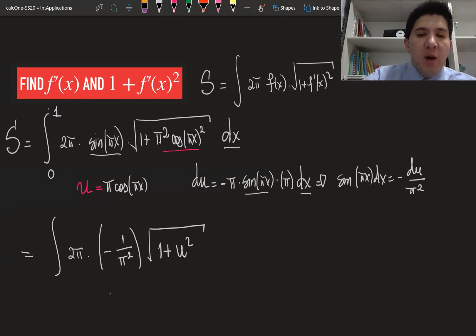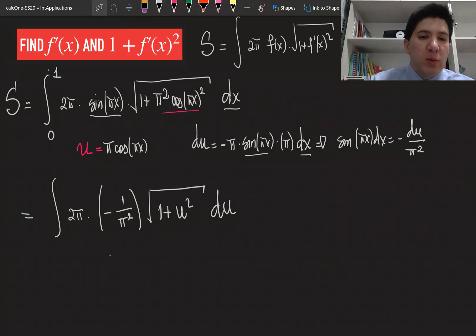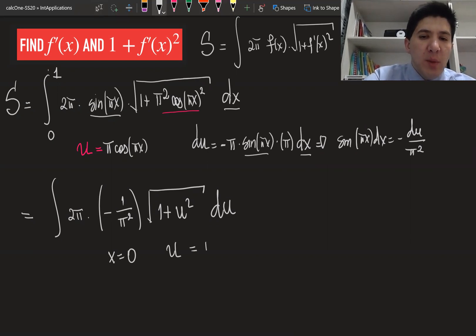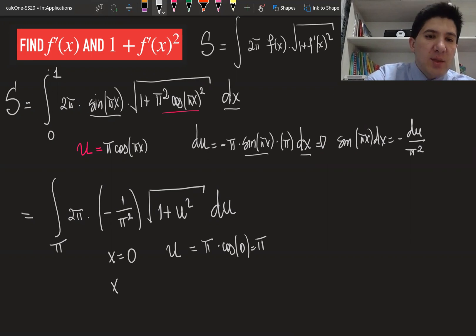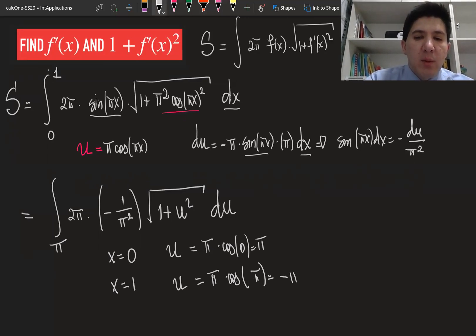We also need to define the new borders of the integration. Since we defined the new variable u, we need to update the limits. If x equals 0, then u equals π·cos(0) which equals π. If x equals 1, then u equals π·cos(π) which equals π times (−1), giving us −π. So the new limits run from π down to −π.